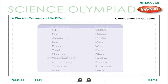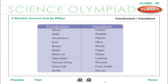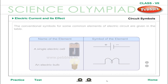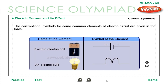Conductors and insulators: some conductors and insulators of electricity are listed above. The conventional symbols for some common elements of an electric circuit are given in the table.